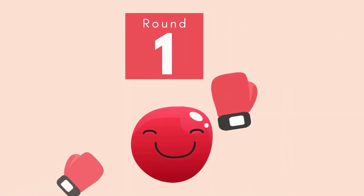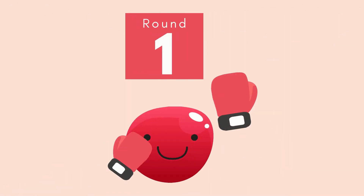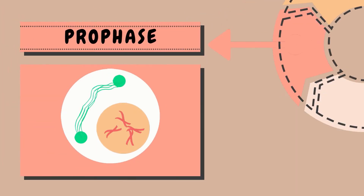In mitosis, only one round of nuclear division occurs. During prophase in mitosis, the replicated pairs of chromosomes called the sister chromatids conduct a specific process.